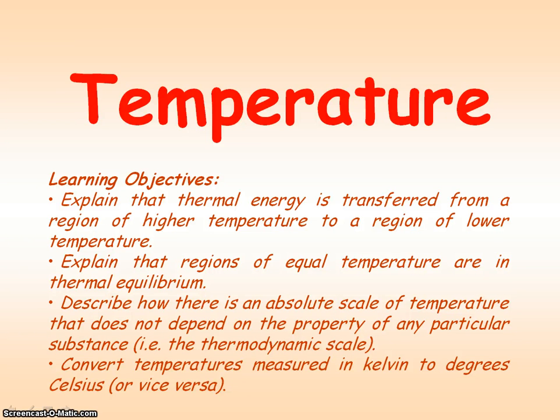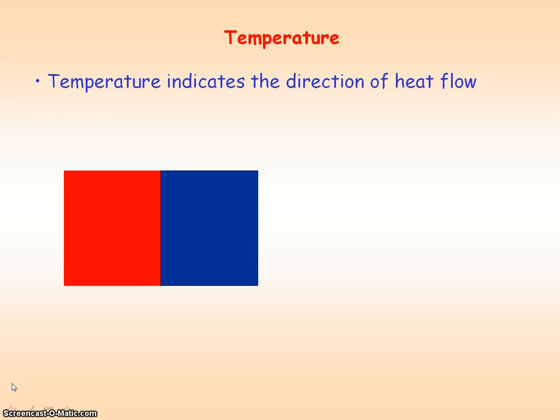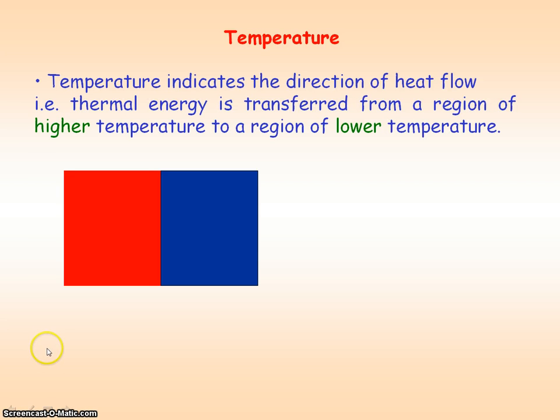We're going to be looking at temperature. Temperature indicates the direction in which heat will flow. Heat energy or thermal energy will flow from a place of high temperature to a place of low temperature. We see a net movement of heat from hot to cold.